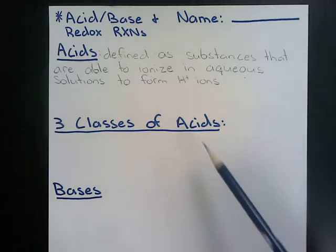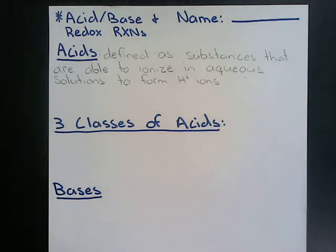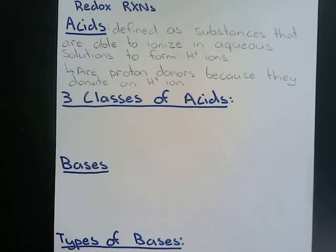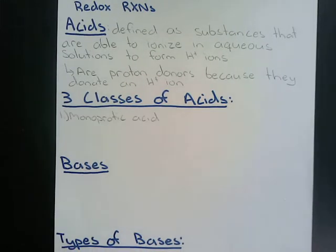We call H+ a hydronium ion, and we'll see why when we get into acids and bases more in depth. One thing to note about acids is that they are proton donors because they donate an H+ ion. We can further classify acids based upon how many H+ ions they're able to donate. The first class is known as a monoprotic acid — monoprotic acids can ionize to form one H+ ion.